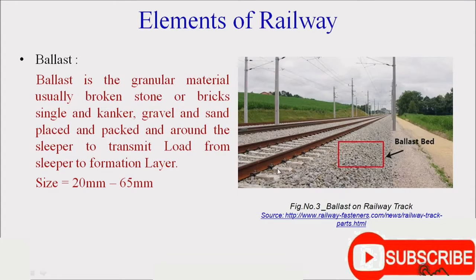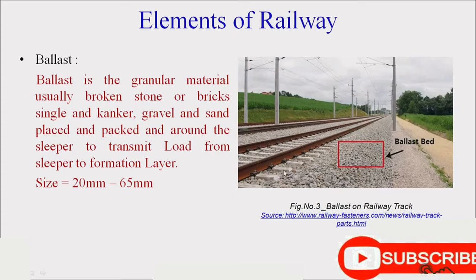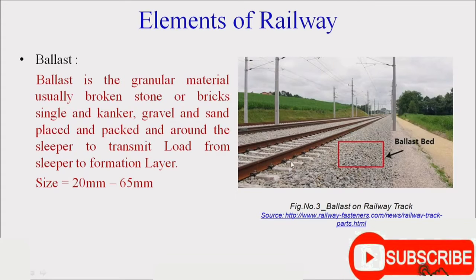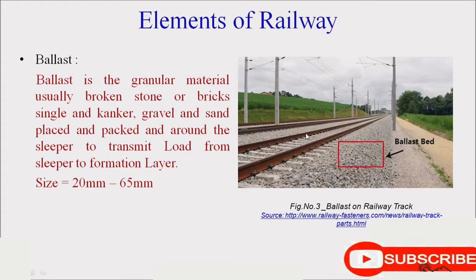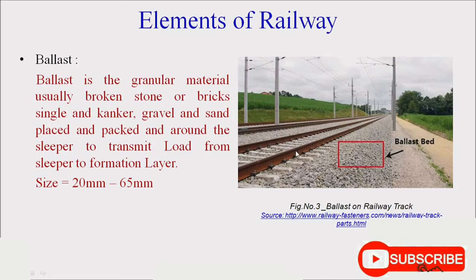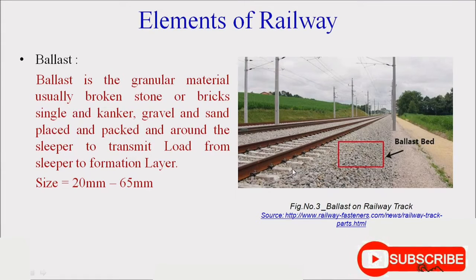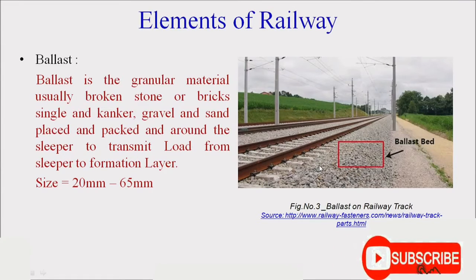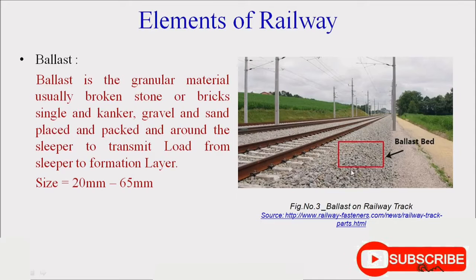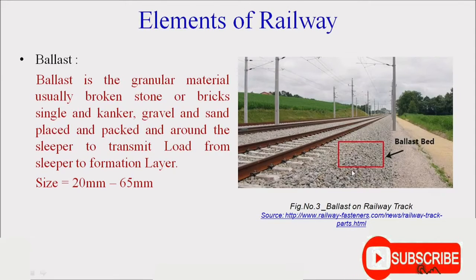Sleepers are the horizontal members seen in the figure. Whatever load comes from the train is transferred to the rails, from the rails it is transferred to the sleepers, and it is uniformly distributed to the ballast formation. From the ballast, it is further distributed to the natural subgrade.